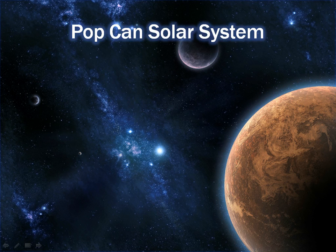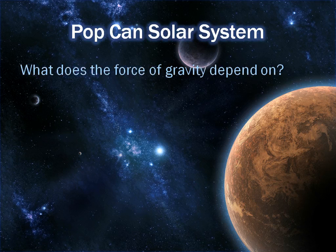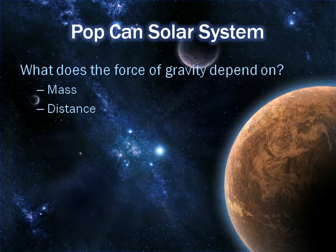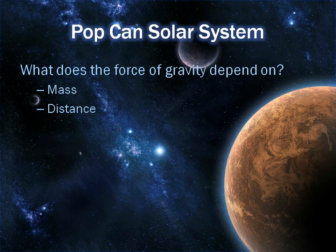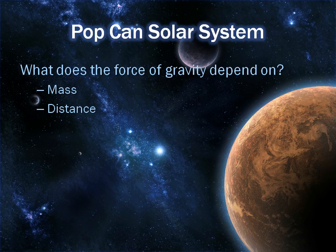We're going to start out by looking at the PopCan solar system. There's one major topic on there, and that is what does the force of gravity depend on? We have learned that it is mass and distance. We especially saw in that investigation that when the mass of the planet is much larger — for example, on Jupiter — the can had a much higher weight, which is dependent on gravity. The distance has an impact too, however we can assume that since it's on the surface, the mass is the greater impact.